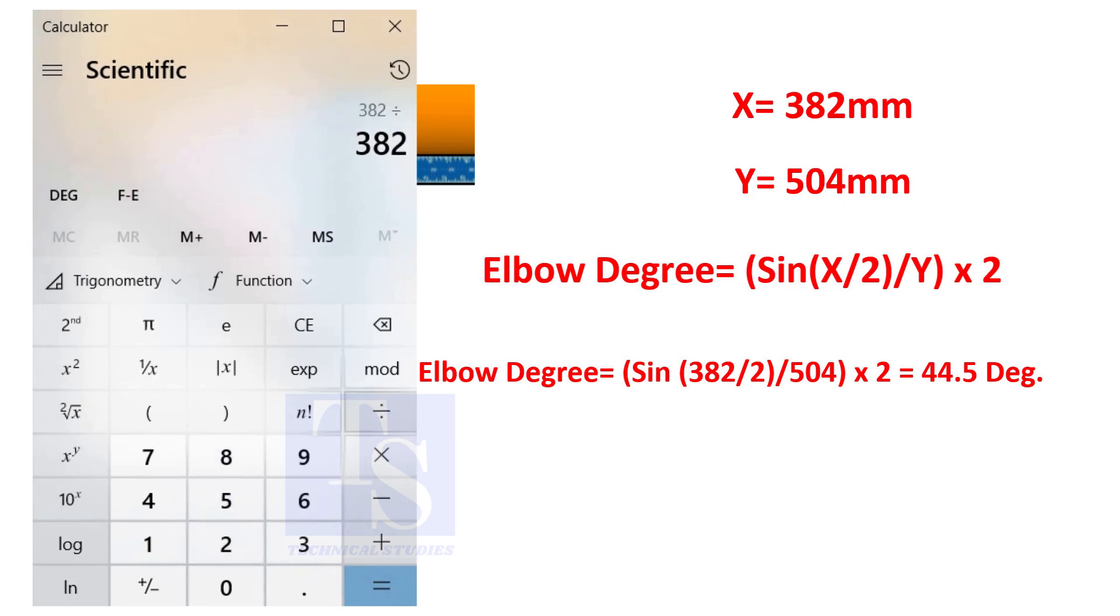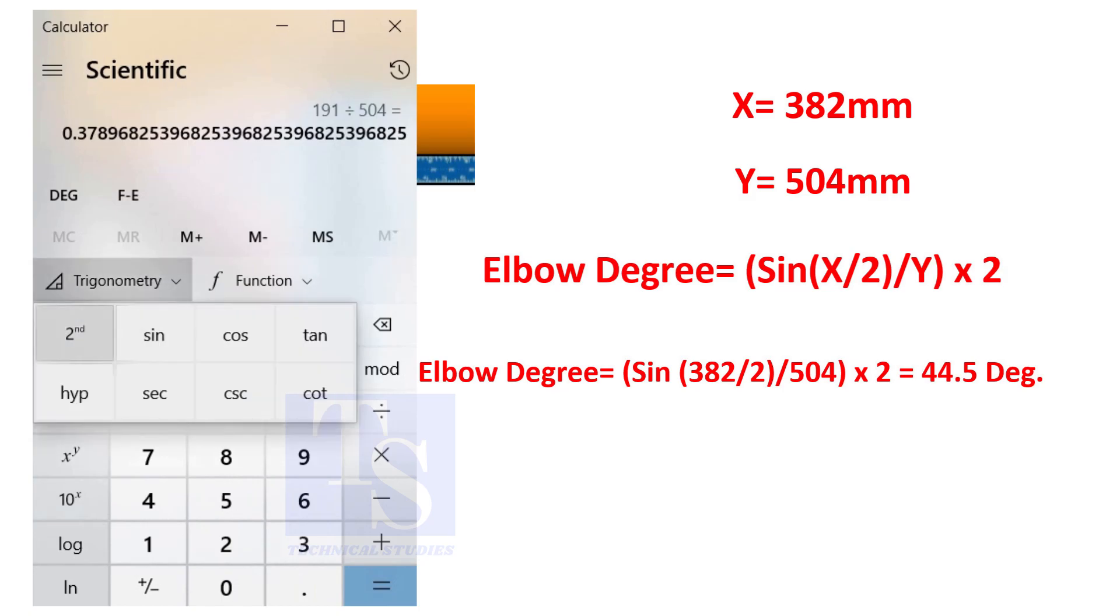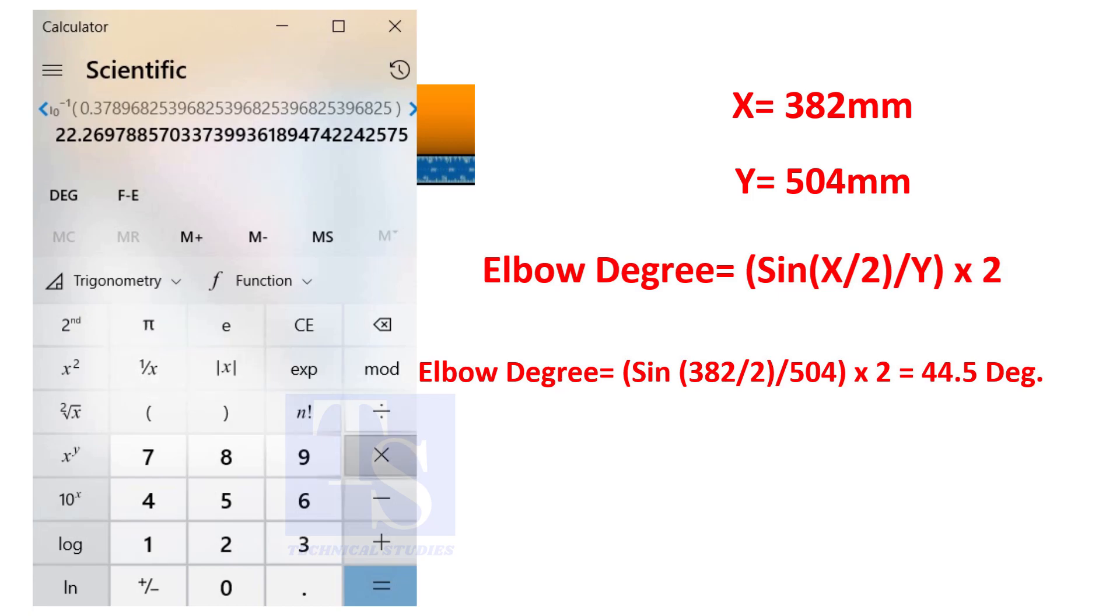You can try this method on pipe spools to measure the distortion due to the welding. So, the degree of the elbow is 44.5.